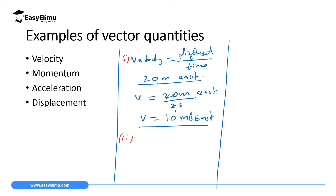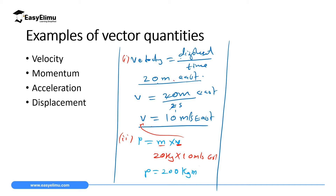Momentum is another vector quantity. We will calculate it in Form 3 under Newton's Laws of Motion. Momentum p = mass × velocity. Mass does not have direction, but velocity is calculated from displacement which has direction. So momentum takes the direction of velocity. For example, a 20 kg body moving at 10 meters per second east has momentum = 200 kg·m/s east. It must have direction, which it picks from the velocity.